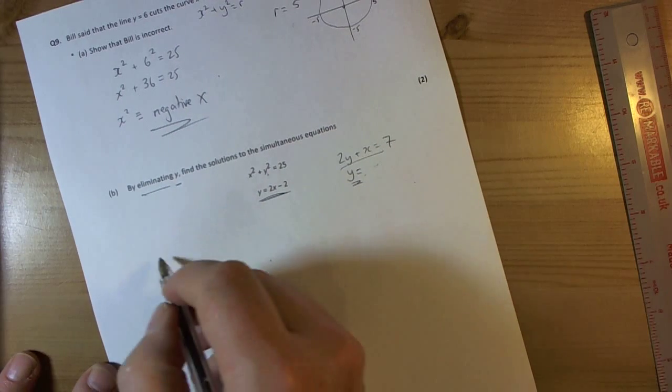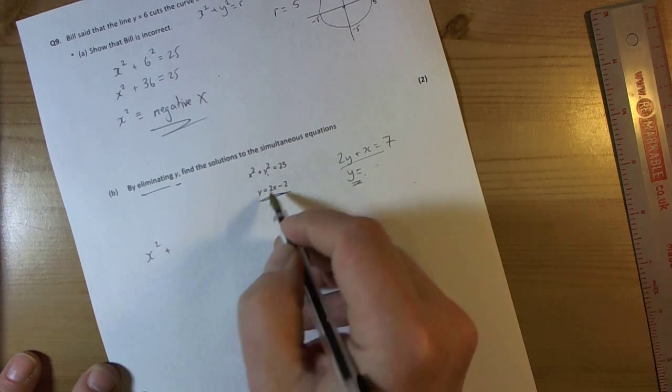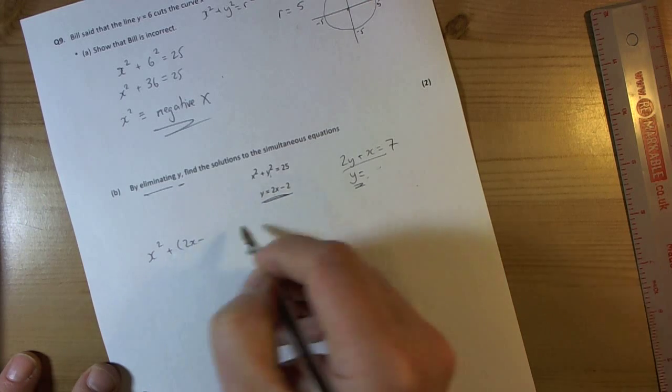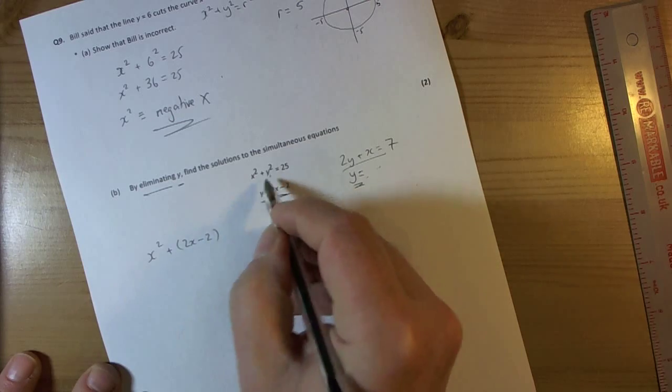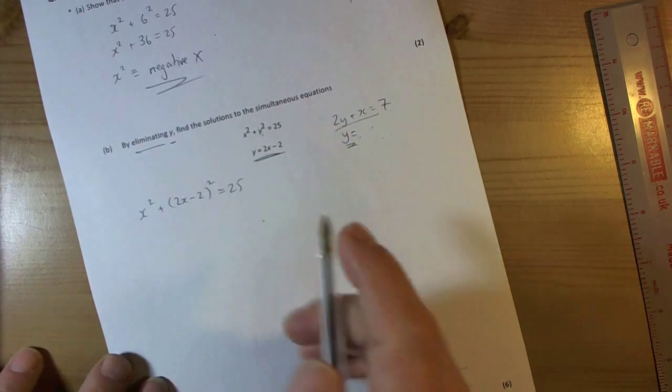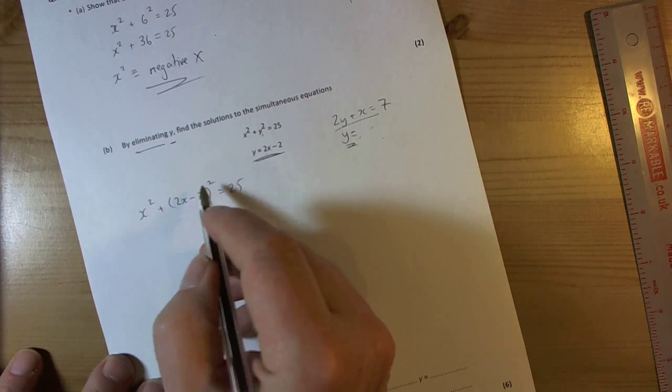So replace the y's then. So we've got x squared plus, this is a two term function, so therefore we must put it in brackets when we're substituting. So 2x minus 2 we're squaring because it's the y squared and that equals 25.